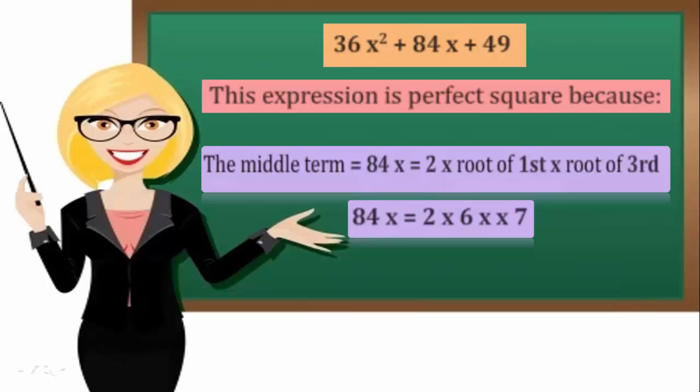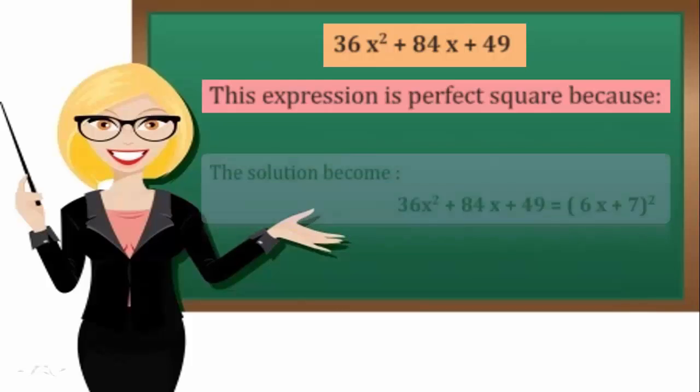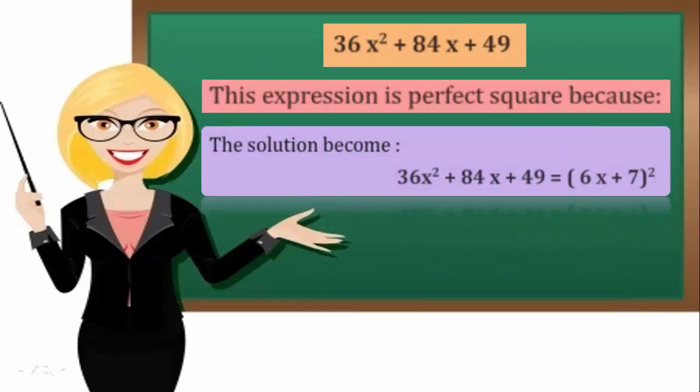84x equals 2 times 6x times 7. Therefore, the solution becomes (6x plus 7) all squared.